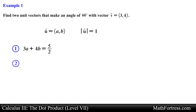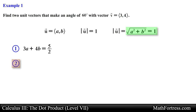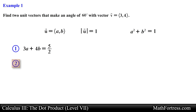We need to generate a second equation in order to solve the system of equations. The second equation is obtained by using the fact that vector u is a unit vector — the magnitude of vector u is equal to 1, or written another way, a squared plus b squared is equal to 1. Now that we have our second equation, we go ahead and solve the system for a and b.